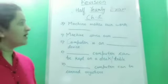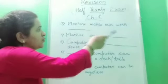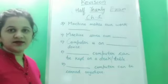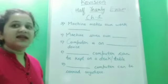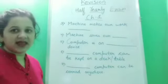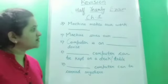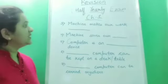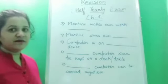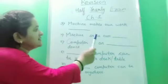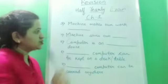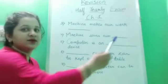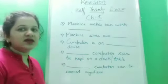The third question: machine makes our work blank — machine makes our work easy. So write down 'easy', E-A-S-Y. Now, come to question number four: machine saves our blank — machine saves our time. So write down 'time', T-I-M-E.